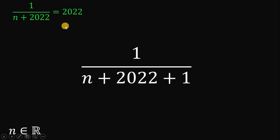Let's focus on our given equation. 1 over N plus 2022 equals 2022. What we're going to do here is multiply both sides by N plus 2022. So we have 1 equals 2022 multiplied by N plus 2022.